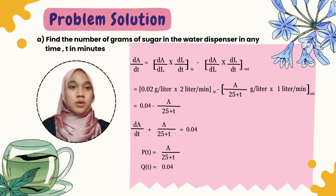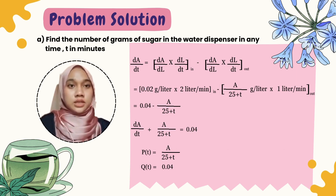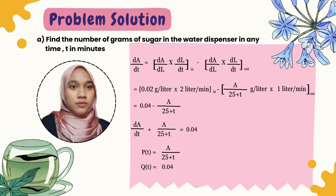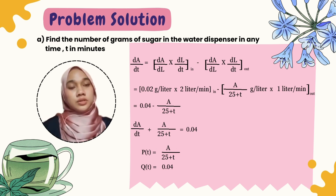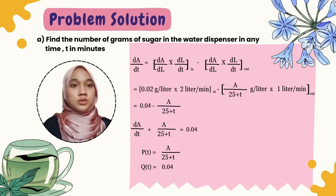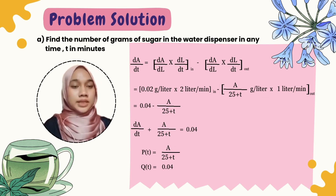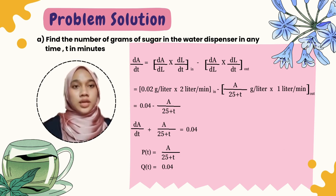The mixing of two liquids can be represented as dA/dt equals (dA/dL × dL/dt) for the inflow minus (dA/dL × dL/dt) for the outflow. Substituting the values: (0.02 × 2) minus (A/(25 + t) × 1), which simplifies to 0.04 minus A/(25 + t).